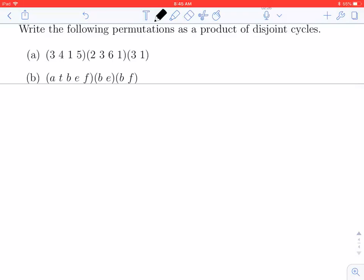Hi everybody. In this video we're going to show how to write a product of permutations written in cycle notation as a product of disjoint cycles. What we're basically trying to do is get rid of redundancy in the cycles. In example A, you'll notice that the number 1 shows up in three different cycles. That means you have three different functions that are moving the 1 somewhere. We want to write this as a product of cycles where you don't have any repetitions in the numbers.